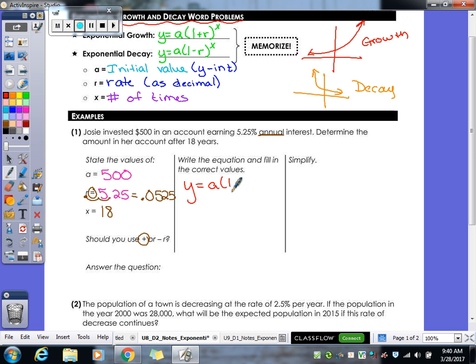So let's write over here our formula first. Again, the more times you write it, the more it's going to help you remember it. So y equals a times 1 plus r to the x power. Let's fill in what we know. So our A is 500, 1 is a 1, our R is 0.0525, and our X was an 18.